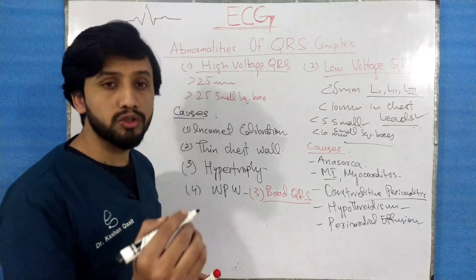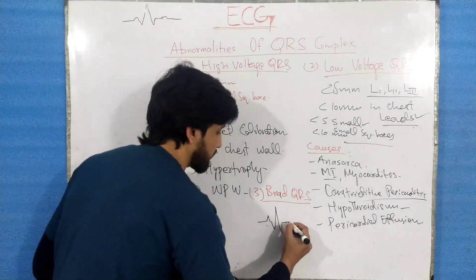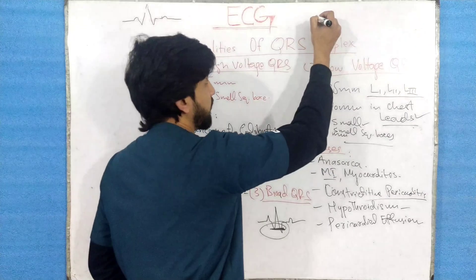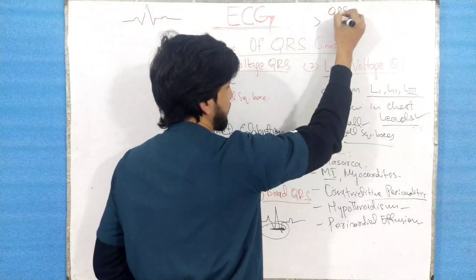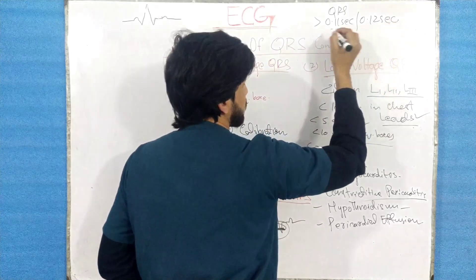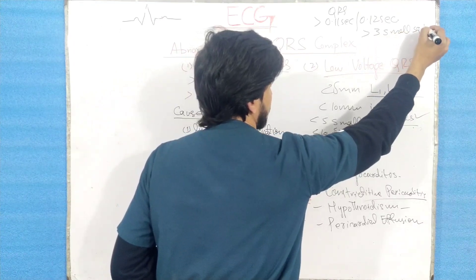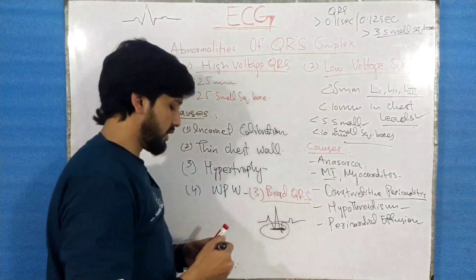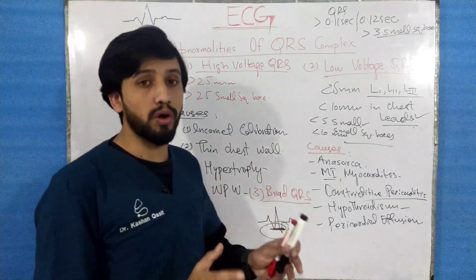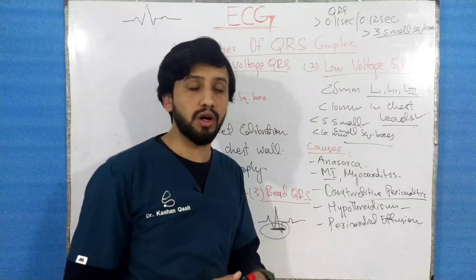When you say that the QRS complex is broad, this means the width of the QRS complex has increased. The normal width or duration of the QRS complex is 0.12 seconds. In simple terms, you can say it is greater than 3 small square boxes. When the width of the QRS complex is greater than 3 small square boxes, you say it is broad, and this is usually seen in left bundle branch block and right bundle branch block.